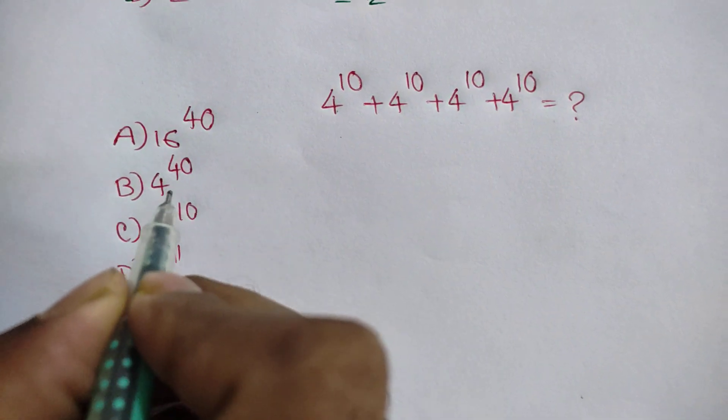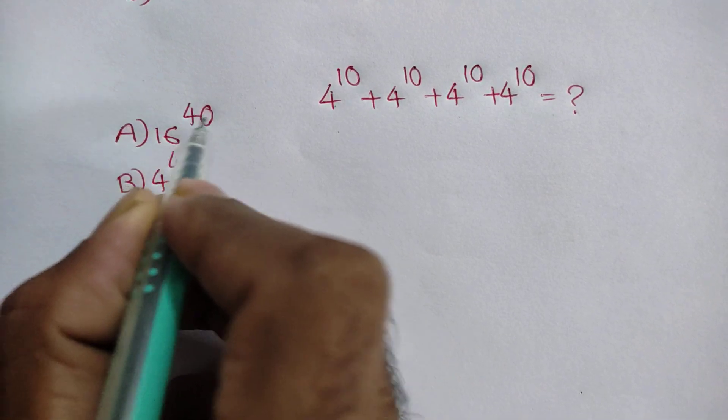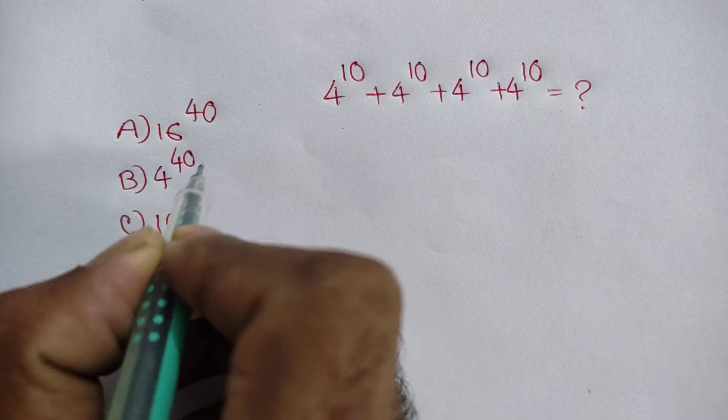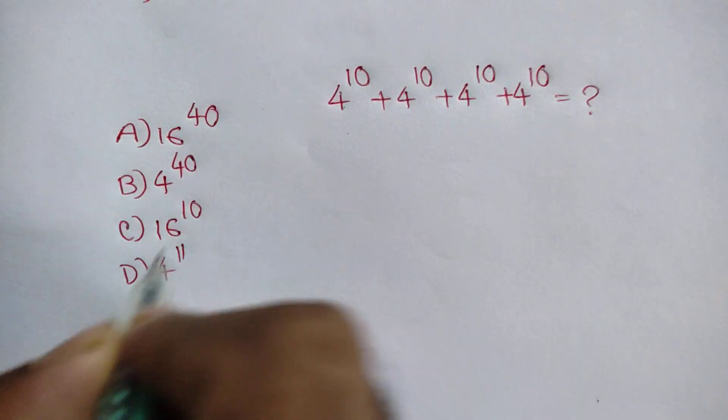What is the right answer? A. 16 power 40, B. 4 power 40, C. 16 power 10, D. 4 power 11.